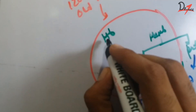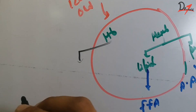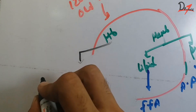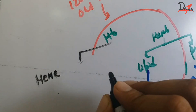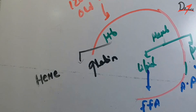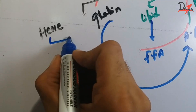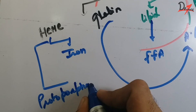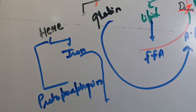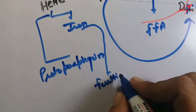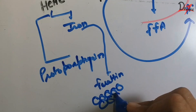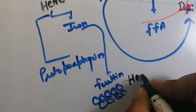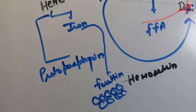Now, what about the hemoglobin? This is really important to know. Hemoglobin will break up into the heme part and globin. The globin again eventually goes to the amino acid pool. The heme breaks up into iron and protoporphyrin. This iron is stored in the body in the form of ferritin. The protoporphyrin, with some enzymatic action, will convert into biliverdin and further into bilirubin.